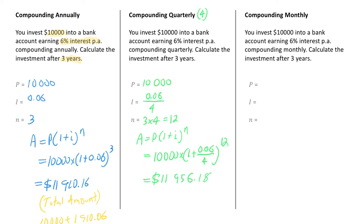Finally, we're going to look at compounding monthly. Similar to quarterly, we need to make adjustments to our interest rate and number of periods. The principal is still $10,000. The interest rate is 0.06, but because we're compounding monthly — 12 times per year — we divide it by 12, giving 0.06 divided by 12. Our N value is three years compounding 12 times per year, so 3 times 12 equals 36.